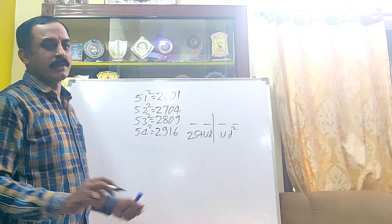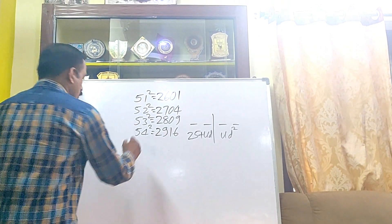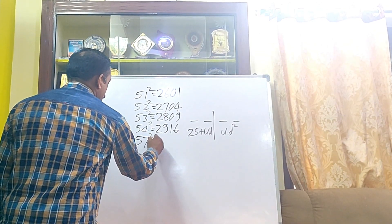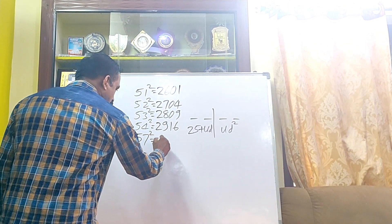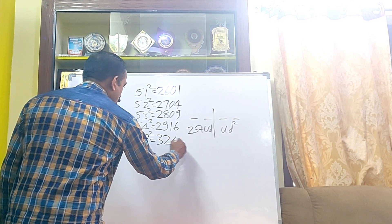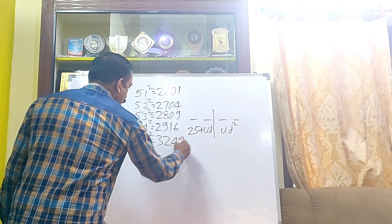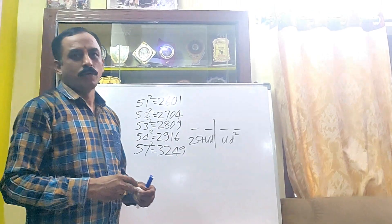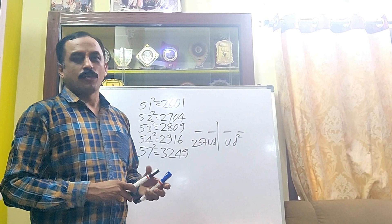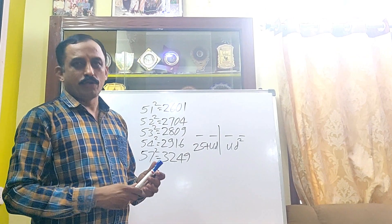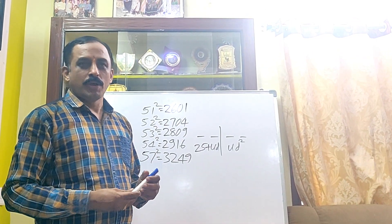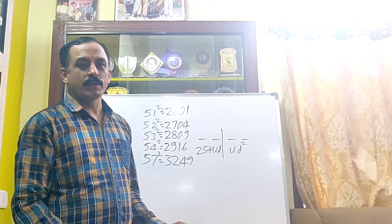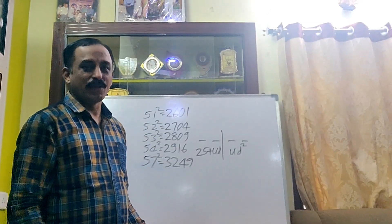One more example: 57 squared. 25 plus 7 is 32, and 7 squared is 49. So 57 squared is 3249. Please follow our YouTube channel — in future classes you can learn so many more basic tips. Thank you.